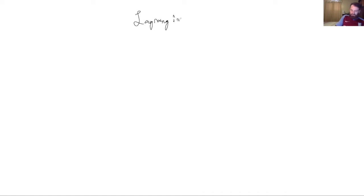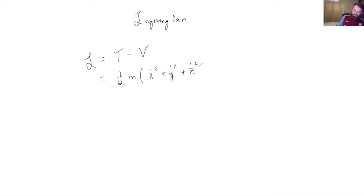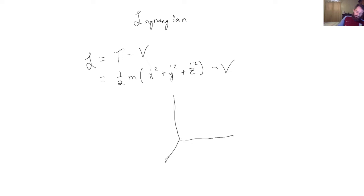So for our regular Lagrangian in Cartesian coordinates, we had T minus V, where T was our kinetic energy: one-half m times x-dot squared plus y-dot squared plus z-dot squared, minus the potential. And so these Cartesian coordinates look like this — here are your x, y, and z axes.